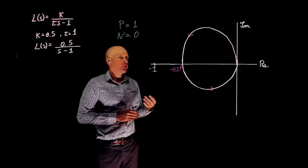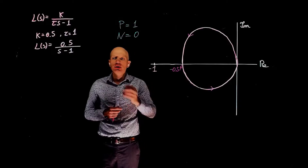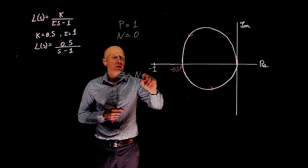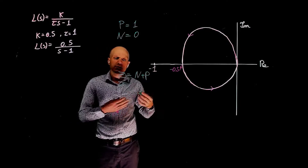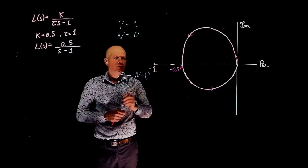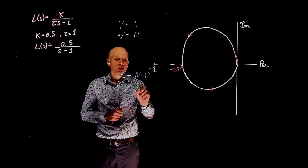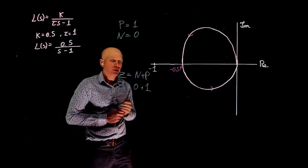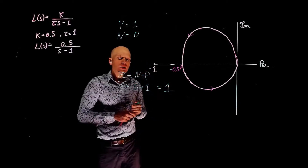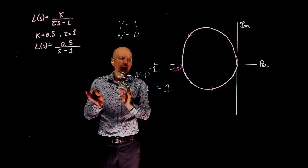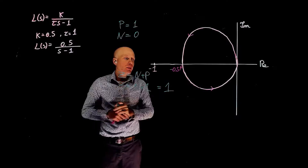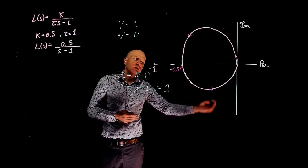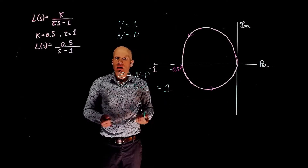We can now determine the number of unstable poles in the closed-loop transfer function through the Nyquist expression Z equals N plus P. Z is the number of unstable poles in the closed-loop system, equal to the number of encirclements of negative 1 — that is 0 — plus the number of unstable poles of the open-loop transfer function, which is 1. So Z equals 1, meaning the closed-loop system will have one unstable pole on the right side of the s-plane, and the system is unstable.